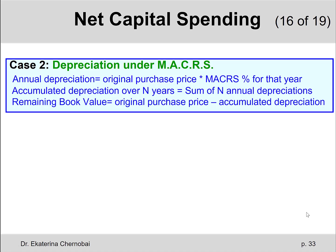The second type of depreciation, which applies to most fixed assets such as equipment and trucks, is called depreciation under MACRS — Modified Accelerated Cost Recovery Systems. The way we calculate the annual depreciation, accumulated depreciation over N years, and the remaining book value at the end of year N are the same as for straight-line depreciation.